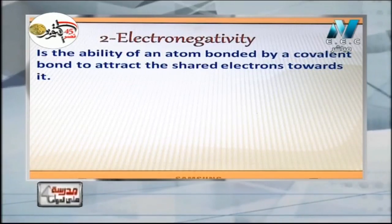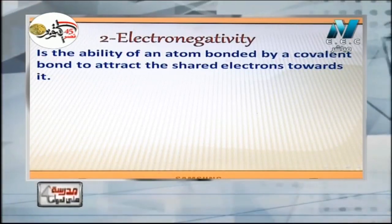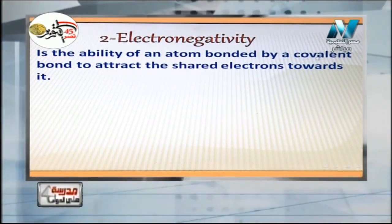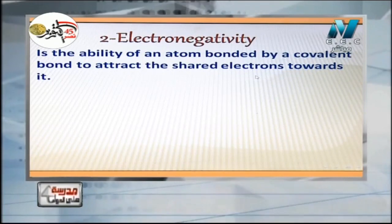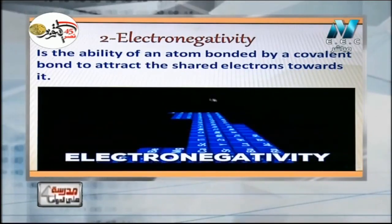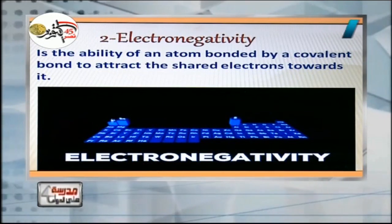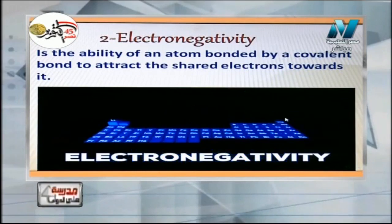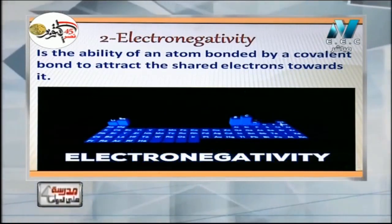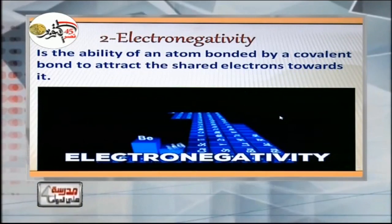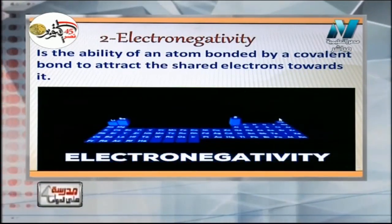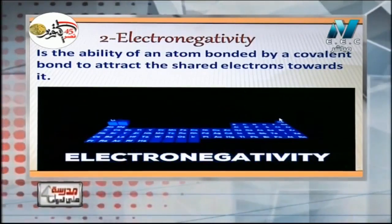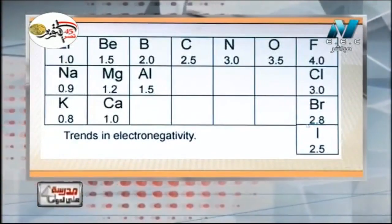Electronegativity is the ability of the atom bonded by a covalent bond — why covalent bond? Because it depends on sharing electrons — to attract the shared electrons toward itself. As we see in the figure, the period starts with small electronegativity and ends with large electronegativity. The highest electronegativity element is fluorine (F), which has electronegativity equal to 4.